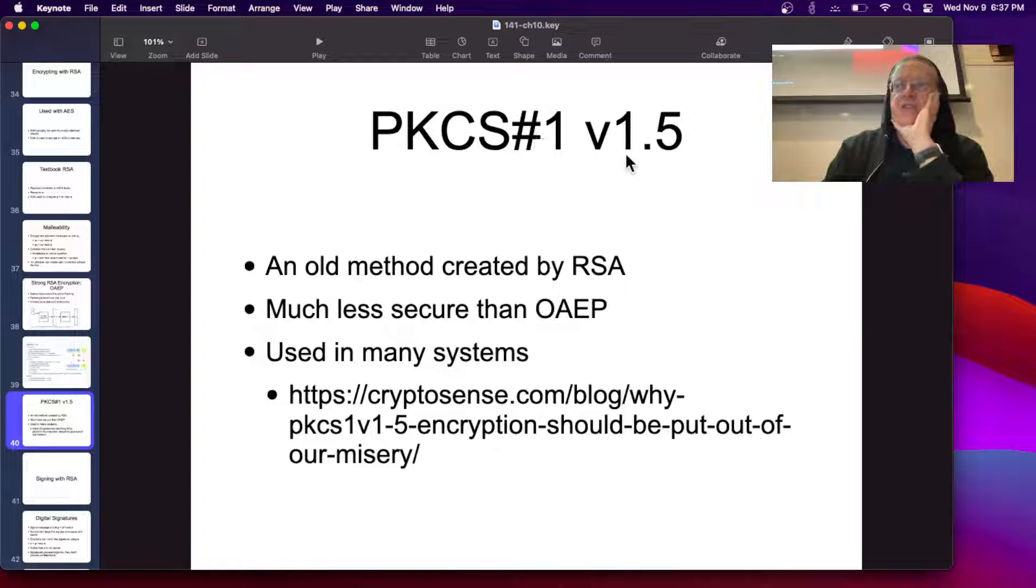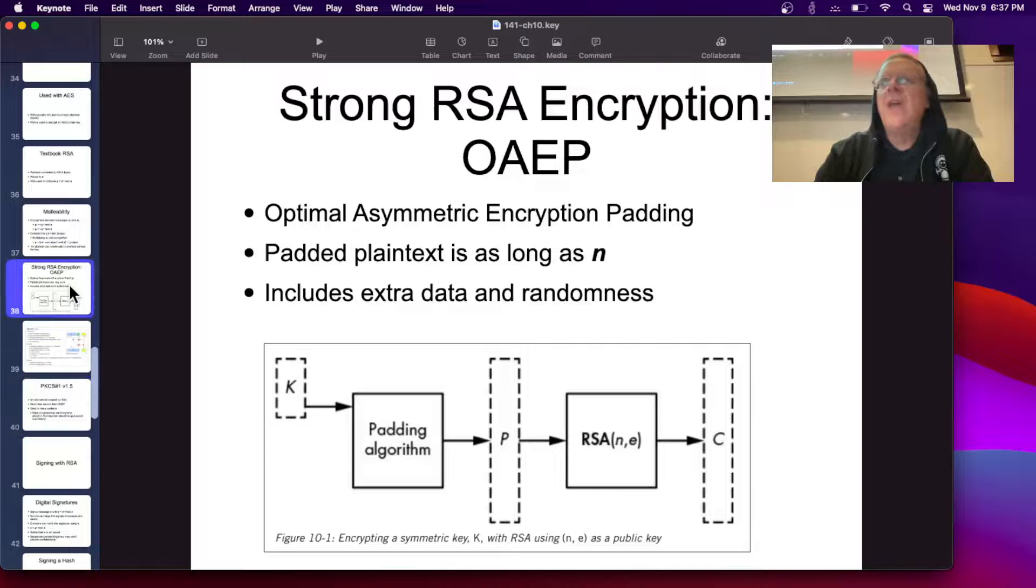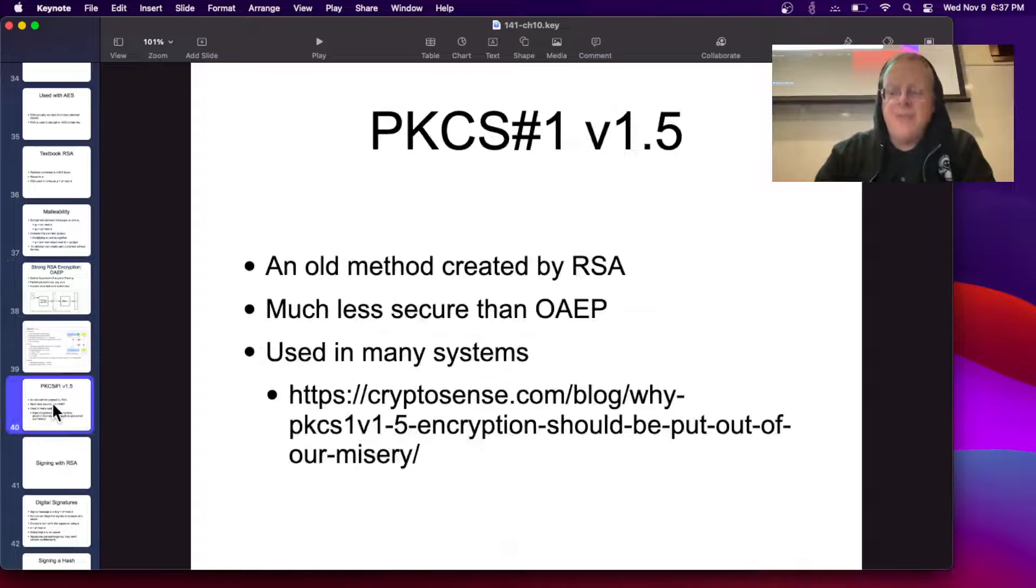Now, there was an older system, PKCS number 1, version 1.5, created by RSA. It was announced in the 70s when RSA came out, and a lot of people use it, but it's much less secure, and a lot of people say it's obsolete, we should quit using it, and instead use this one OAEP instead, which is better.